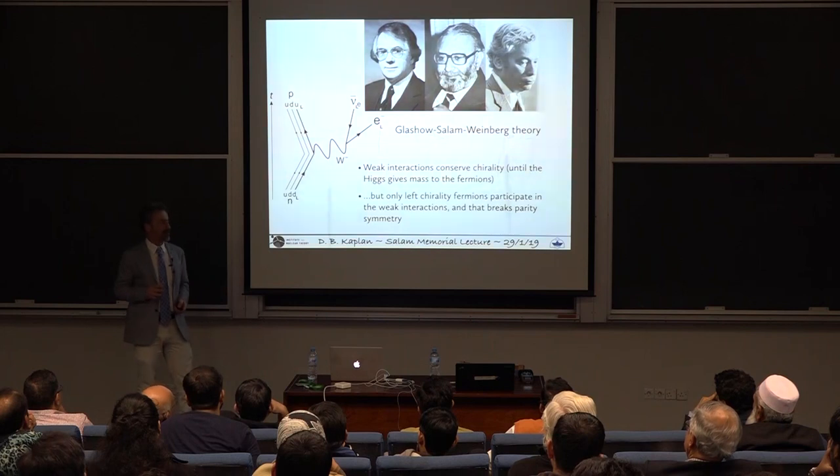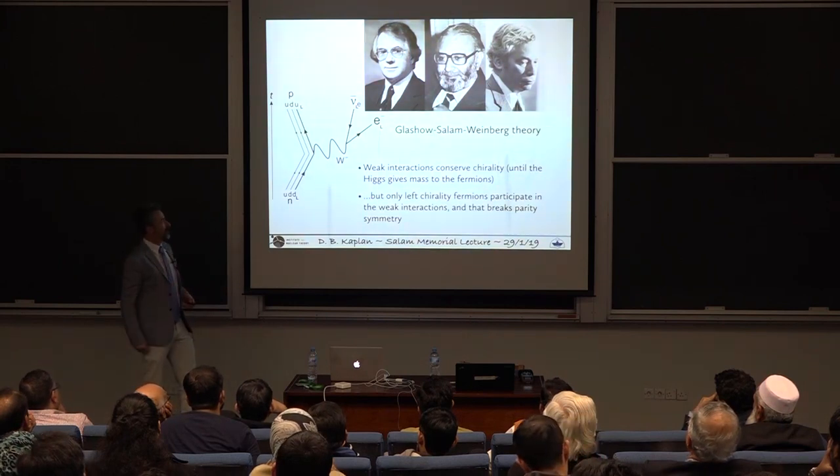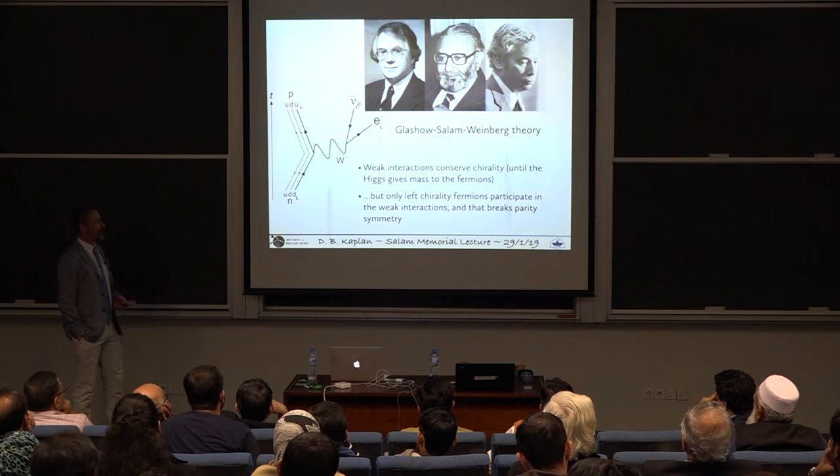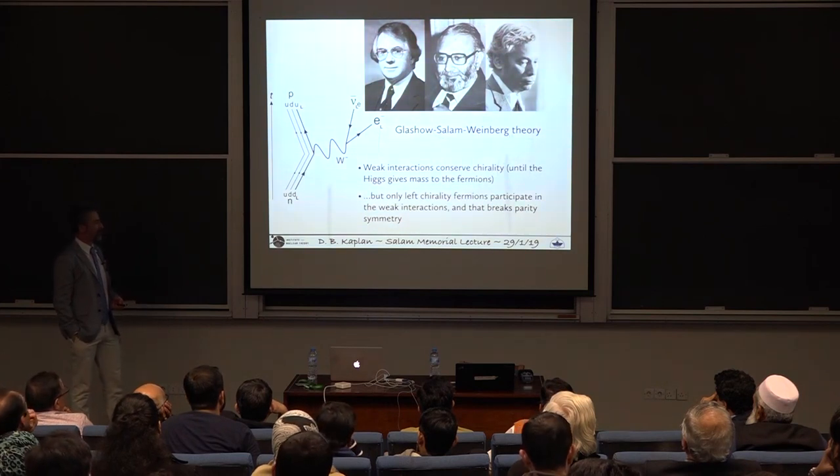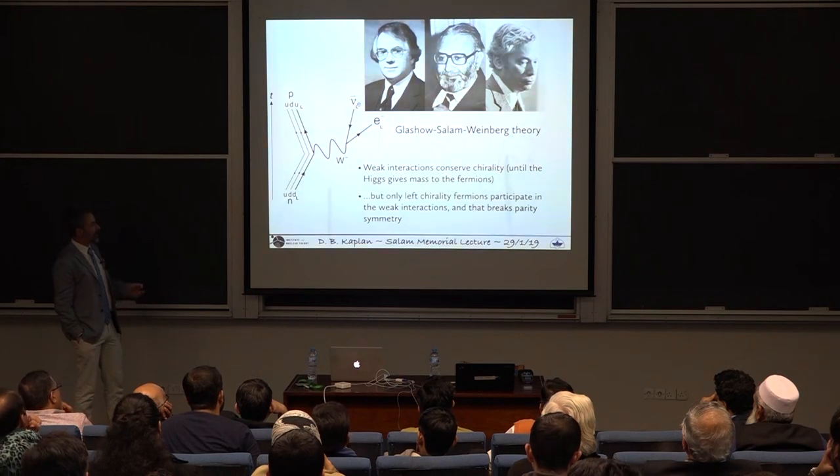She did a beautiful experiment that was much cleaner than that old 1928 experiment. She took some cobalt-60, which is radioactive, and they put in a strong magnetic field so all the spins were aligned. And then they looked at its radioactive decay, and the electrons came out in one direction and not in the other direction. And that was a sure sign that there was parity violation. This led immediately to more thinking about the weak interactions.